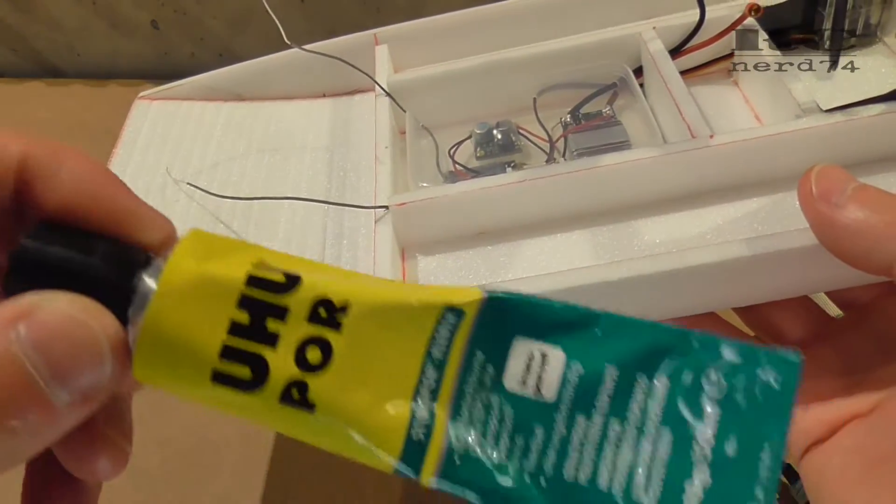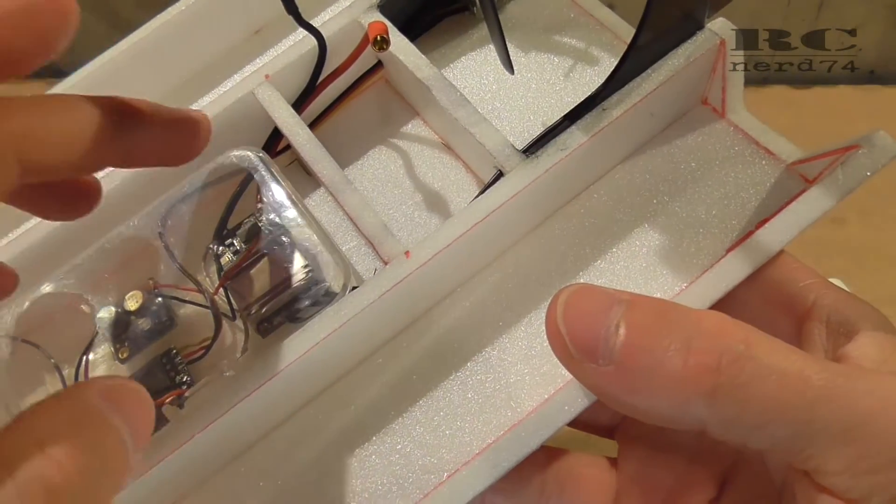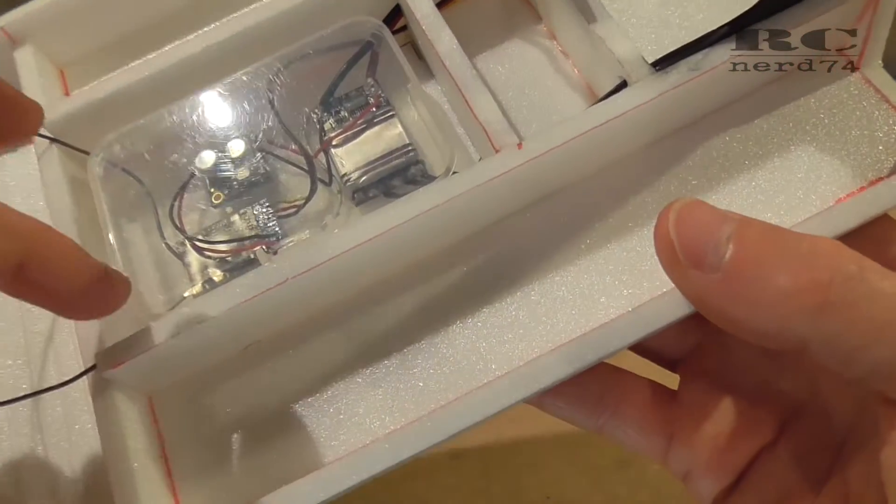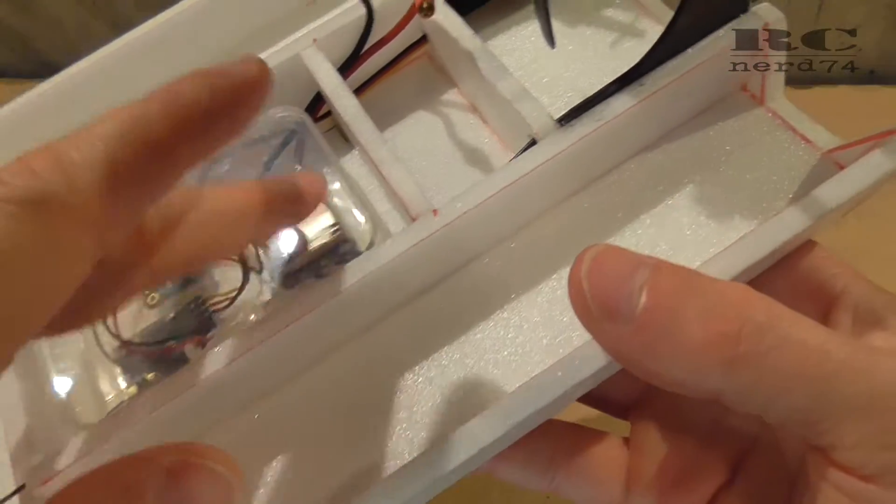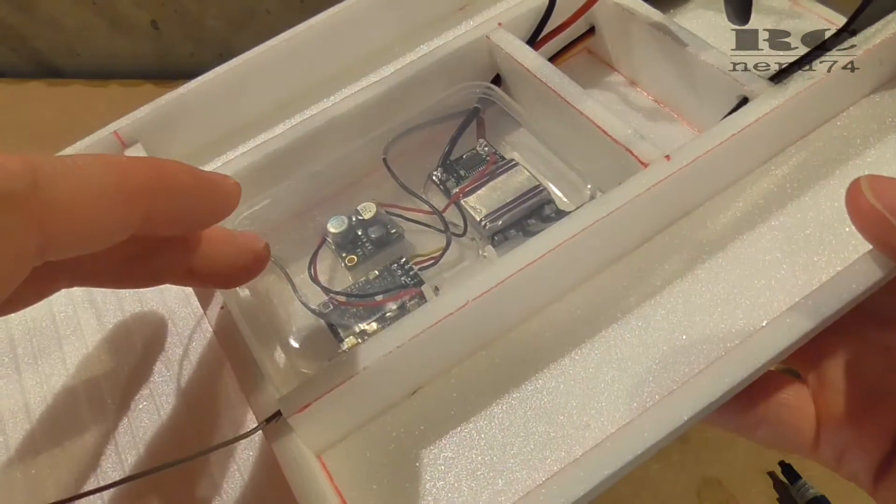So I will also use my UHU pore glue just to close all the holes I drilled for battery cables, motor cables, servo and antenna just to make sure the electronics box will be as waterproof as possible.